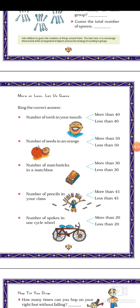In your class, suppose all students are there — count how many pencils are there, and then make a round. Now since classes are not going on, you find other pencils. How many pencils do you have? According to that, make a round. Then count the number of spokes in one cycle wheel — more than 20 or less than 20.